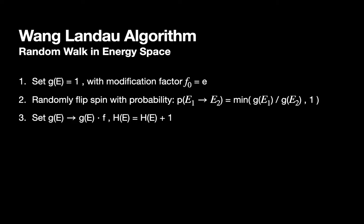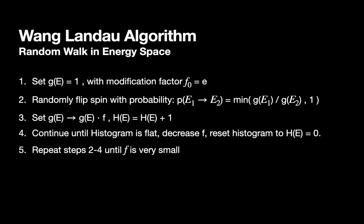Next, we'll modify our density of states and update the histogram for the energy that the system is in. We continue until the histogram is mostly flat. Then we decrease the modification factor and reset the histogram to its initial value of zero. We repeat steps two through four until our modification factor is small.